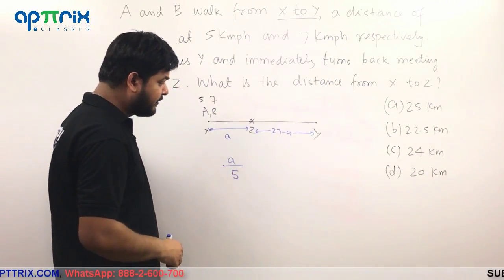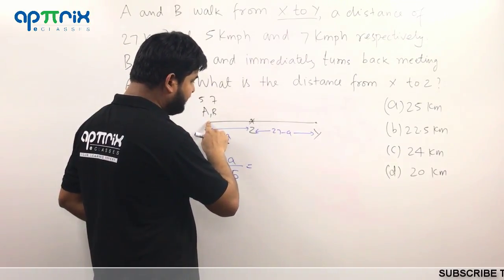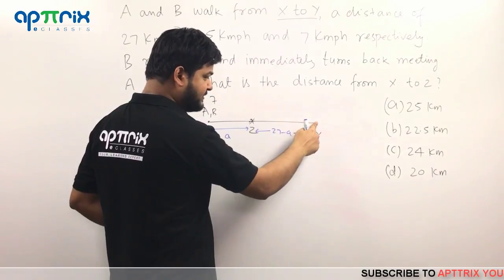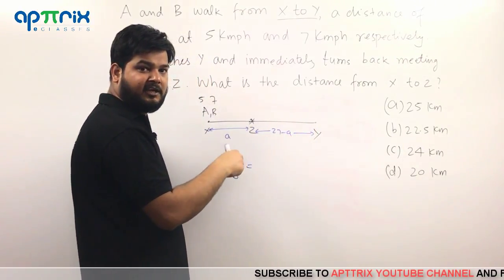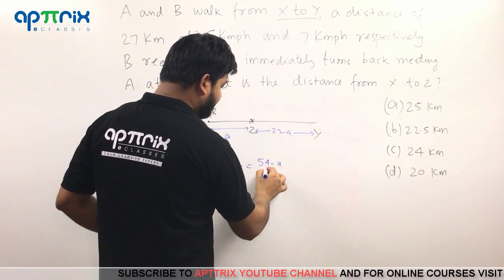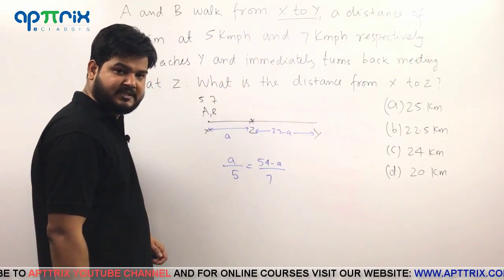So A upon 5 you will write here. While for B, you can clearly see B has gone from here to here. Complete distance that is 27 plus turn back and this distance. So 27 minus A as well. So in total the distance covered by B will be 54 minus A divided by the speed which is equal to 7.